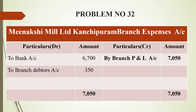Next is the branch expenses account. We have payment by bank account of Rs. 6,700, and branch debtors — bad debts and discount allowed — Rs. 350. After totalling, the balancing figure transferred to branch profit and loss account is Rs. 7,050. Grand total is Rs. 7,050.